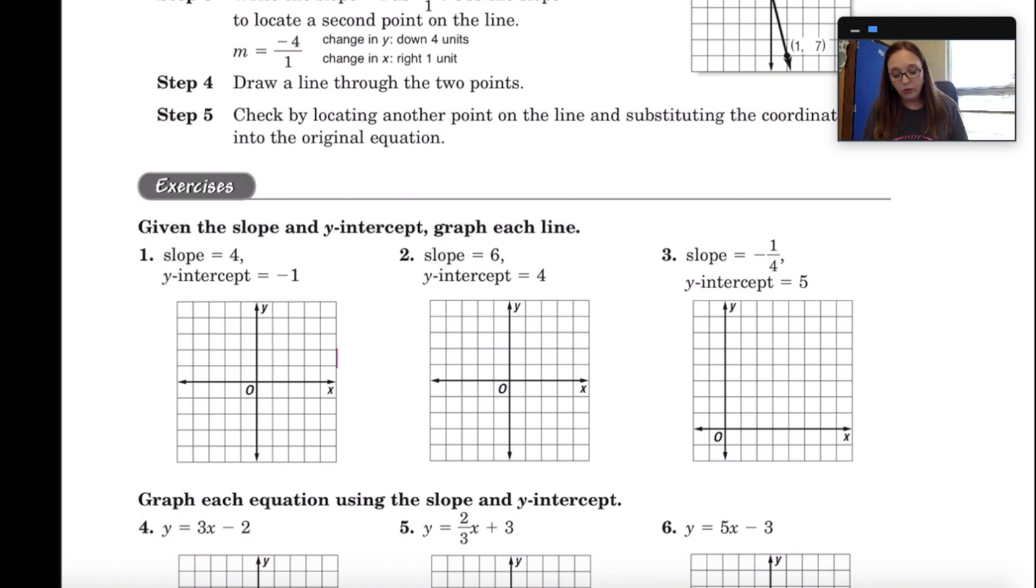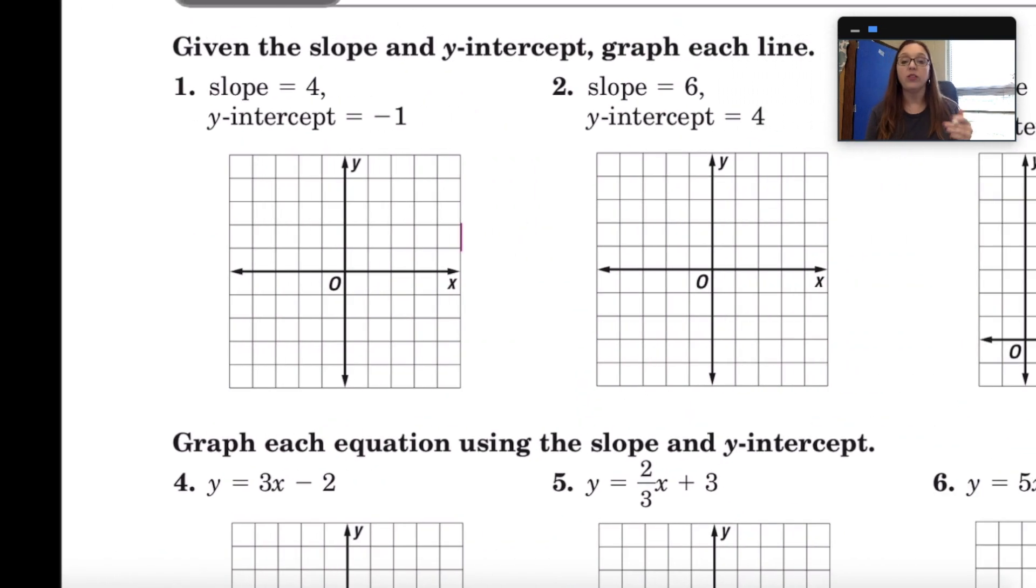So the very first section has three graphs and it says given the slope and y-intercept, graph each line. Look at number one. We know that the slope is four and the y-intercept is negative one. Think of the slope as a set of directions. The y-intercept, treat that as your starting point.